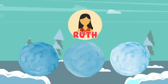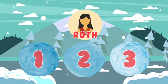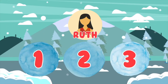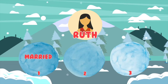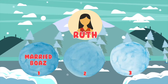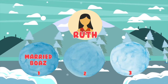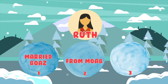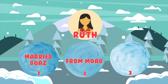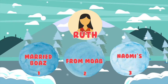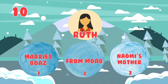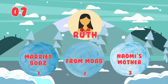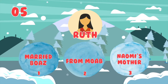Ruth is our next Bible character. Which of these is not true about Ruth? One: Ruth married Boaz. Two: Ruth was from Moab. Three: Ruth was Naomi's mother. So what do you think? Which of these snowballs is incorrect and therefore about to come flying right at us?